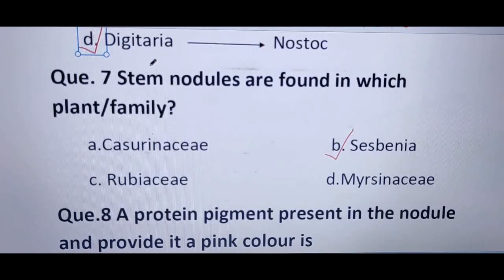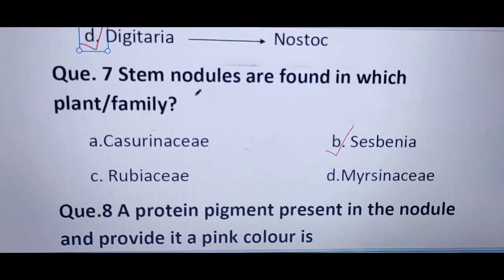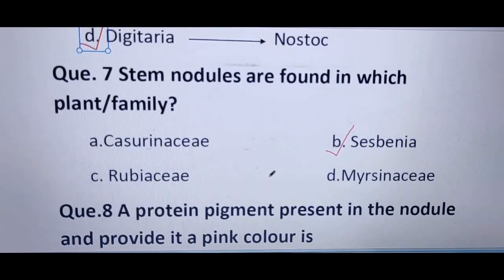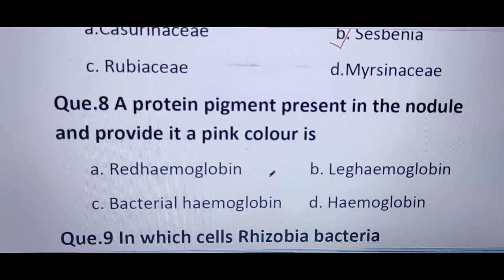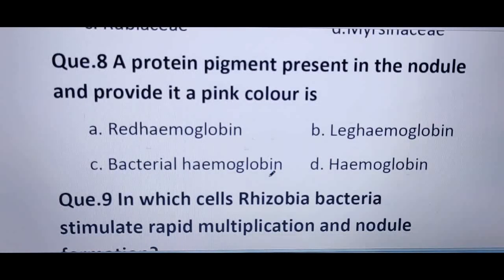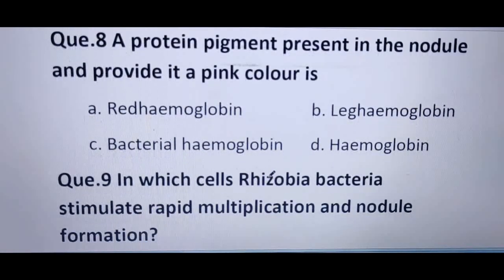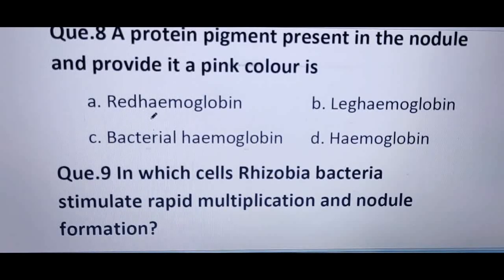If asked about leaf nodules, they are found in Rubiaceae and Myrsinaceae families. Next question: a protein pigment present in the nodule that gives it a pink color — the options are red hemoglobin, leg hemoglobin, bacterial hemoglobin, and hemoglobin. The correct answer is B — leg hemoglobin.